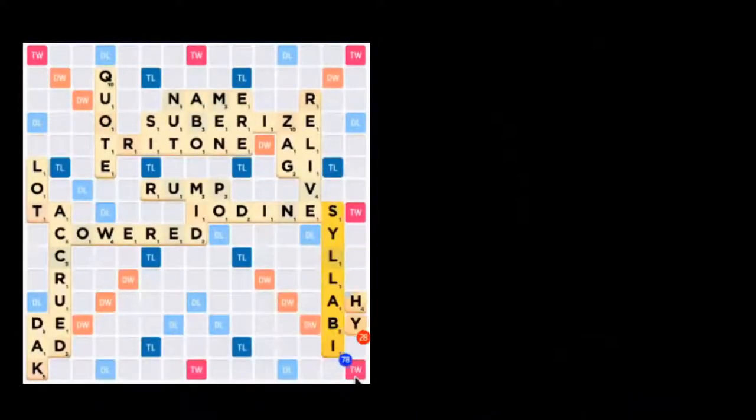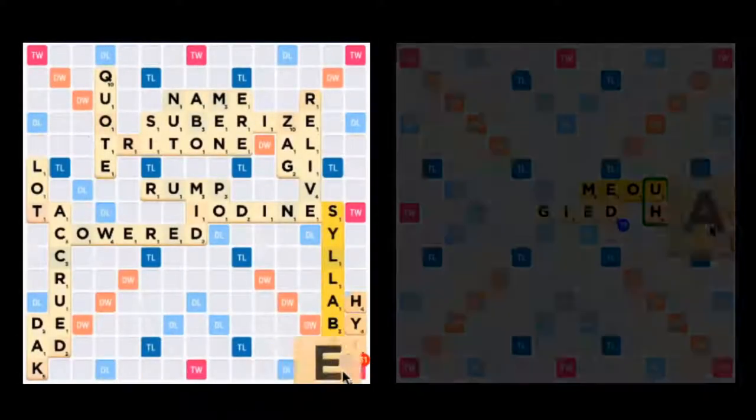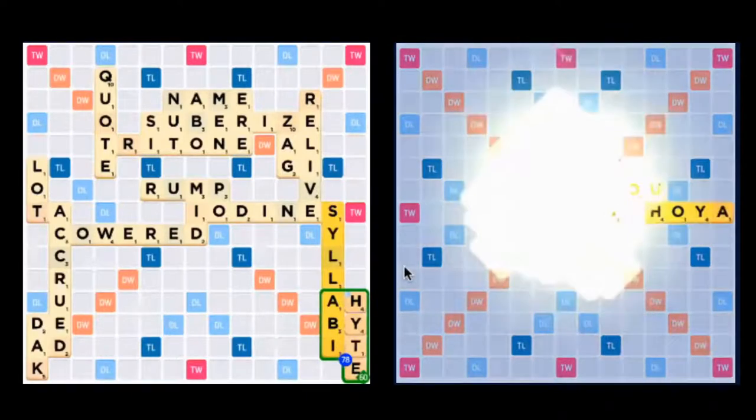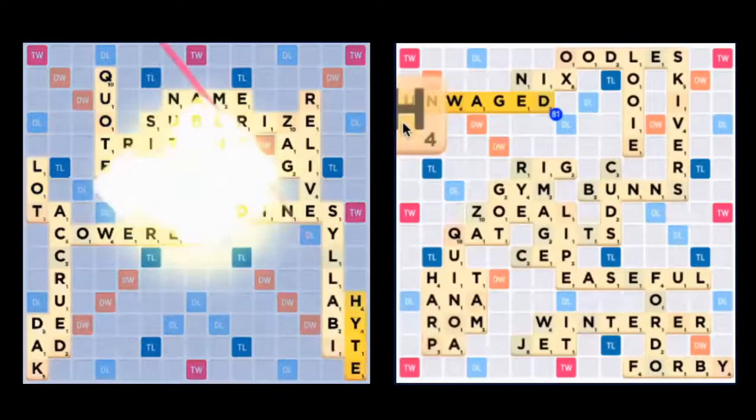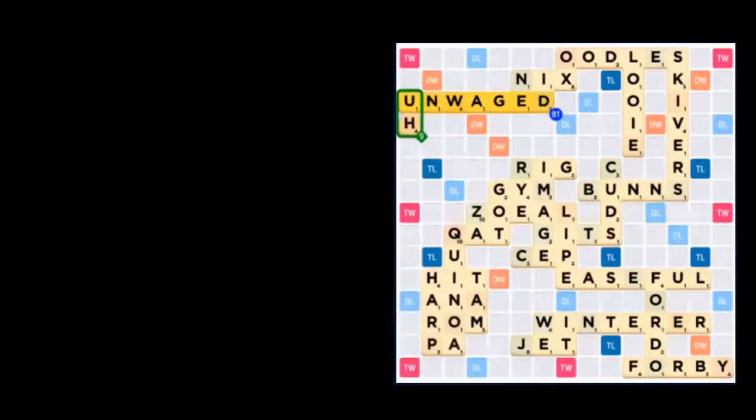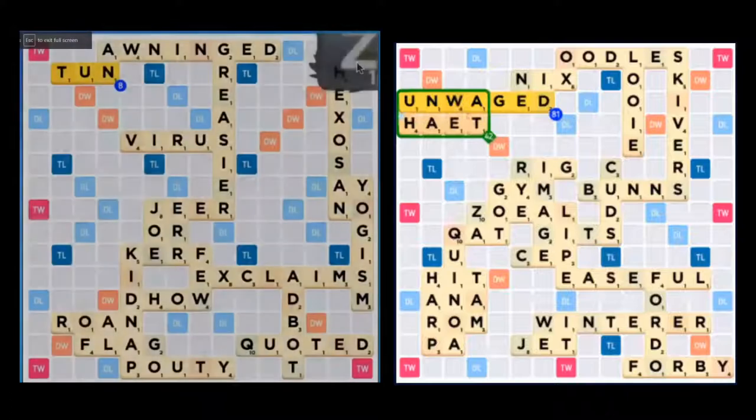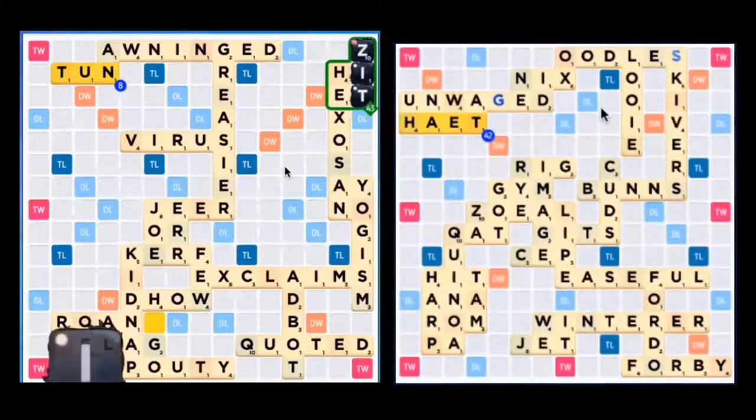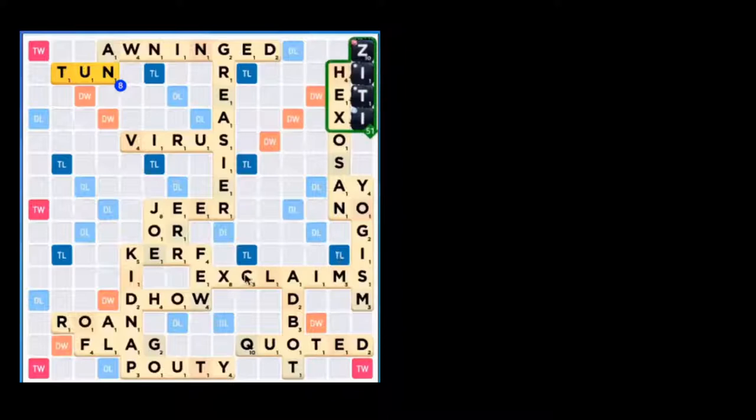When your opponent places a vowel next to a premium square, odds are good that you'll have a strong overlap in response with your H, thanks to its four-point face value and wide range of two-letter words. Just be wary of exposing an H near a triple word score or other valuable area of the board yourself, as your opponent will be just as likely to capitalize.